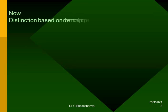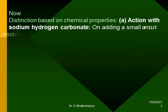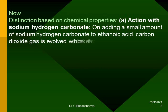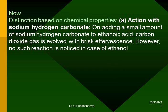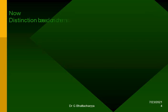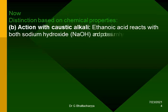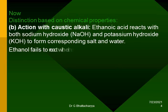Distinction based on chemical properties: A. Action with sodium hydrogen carbonate — on adding a small amount of sodium hydrogen carbonate to ethanoic acid, carbon dioxide gas is evolved with brisk effervescence. However, no such reaction is noticed in the case of ethanol. B. Action with caustic alkali — ethanoic acid reacts with both sodium hydroxide (NaOH) and potassium hydroxide (KOH) to form the corresponding salt and water. Ethanol fails to react with either of these.